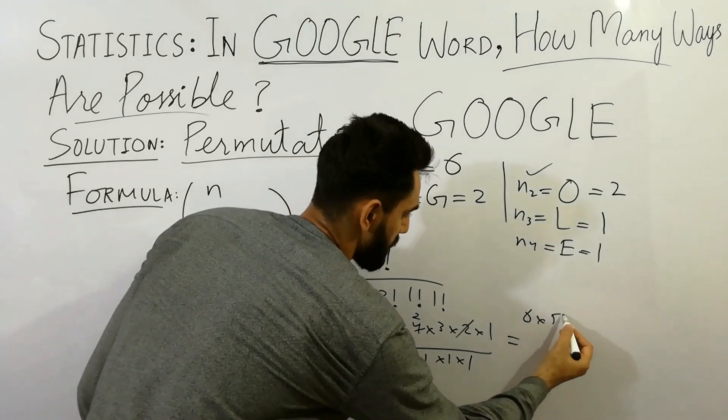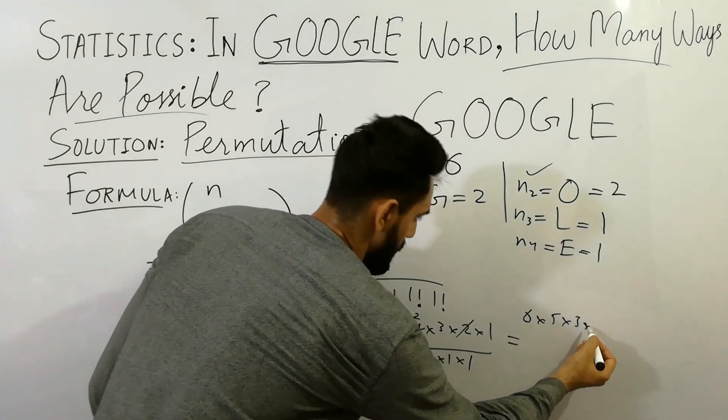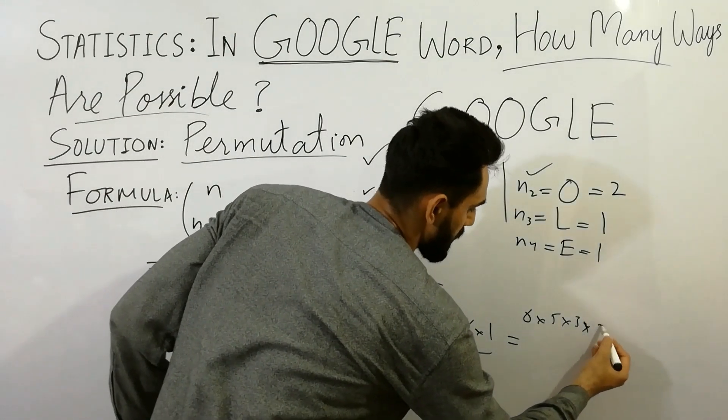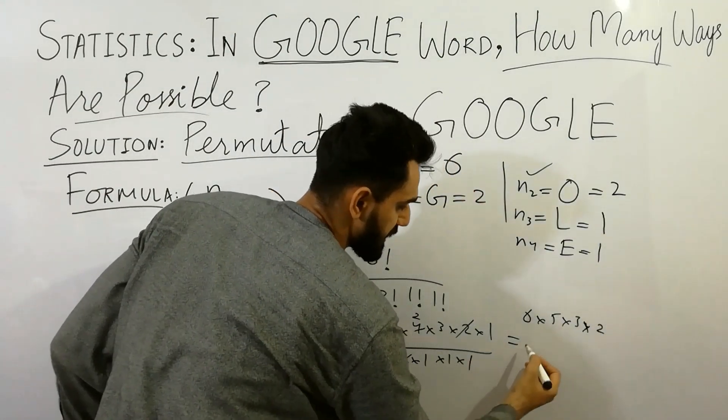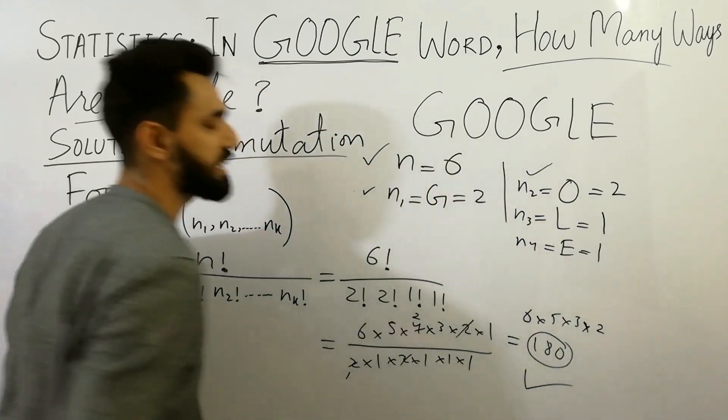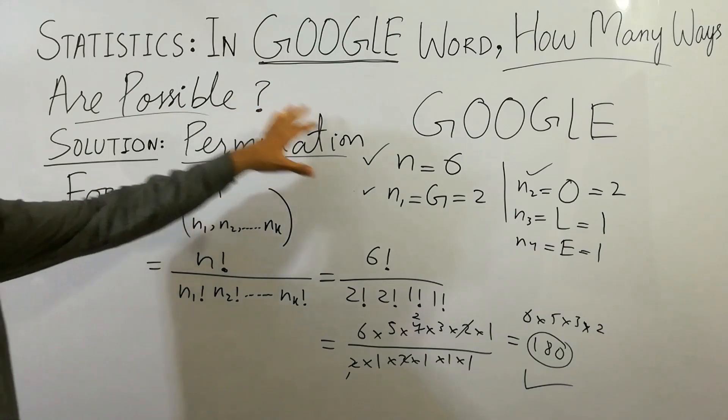We will get the value here: 6 multiplied by 5 multiplied by 3. 6, 5, 2, 3 multiplied by 2. We will get the value here 180. So there are 180 ways you can arrange the Google word.